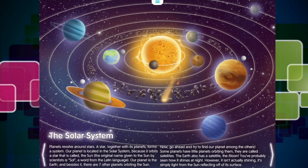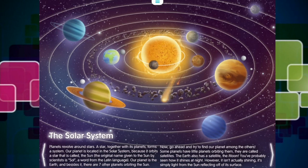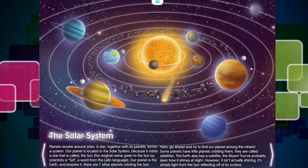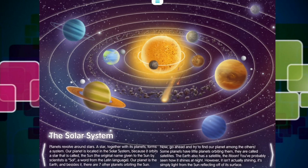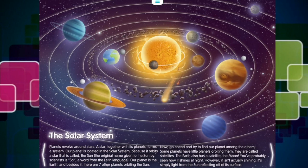Some planets have little planets orbiting them. They are called satellites. The Earth also has a satellite, the moon. You've probably seen how it shines at night. However, it isn't actually shining. It's simply light from the sun reflecting off its surface.